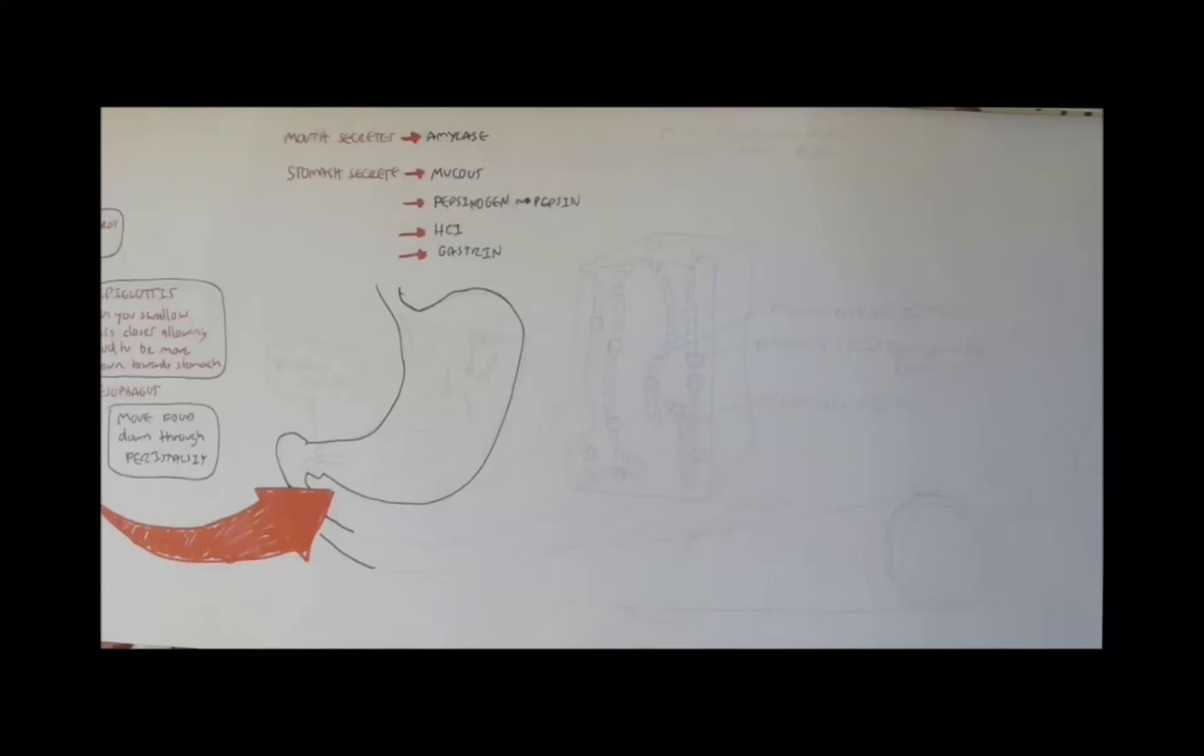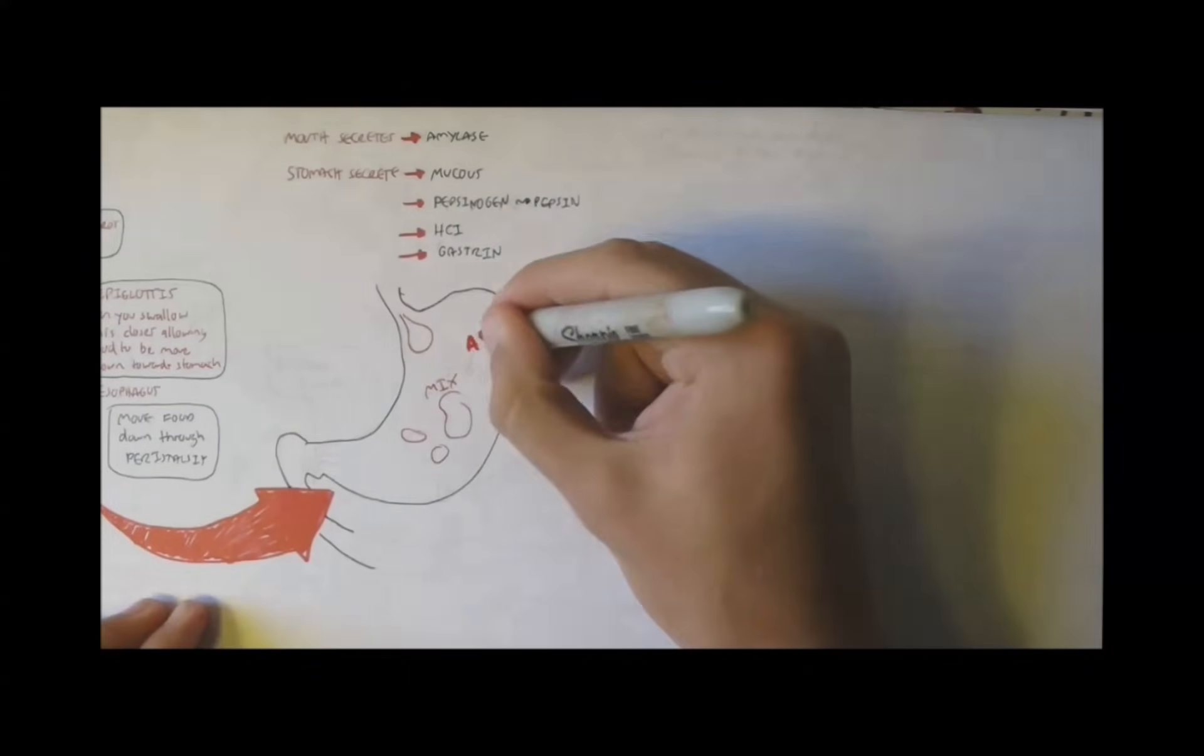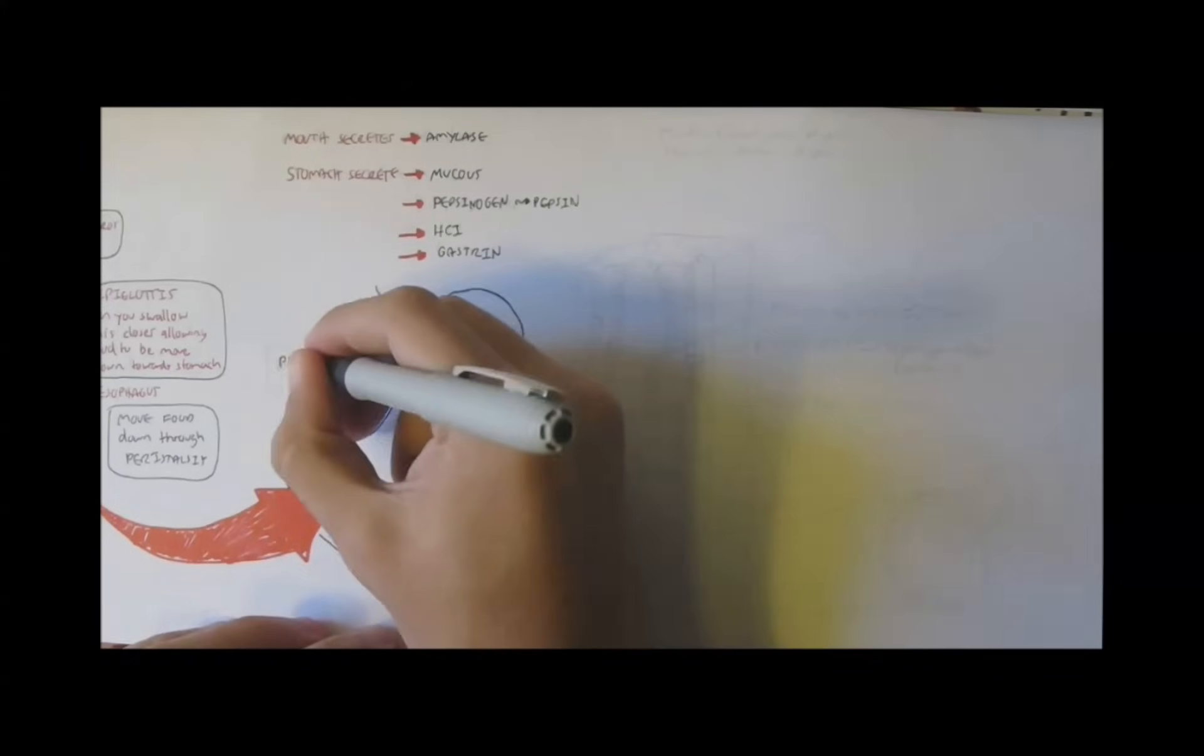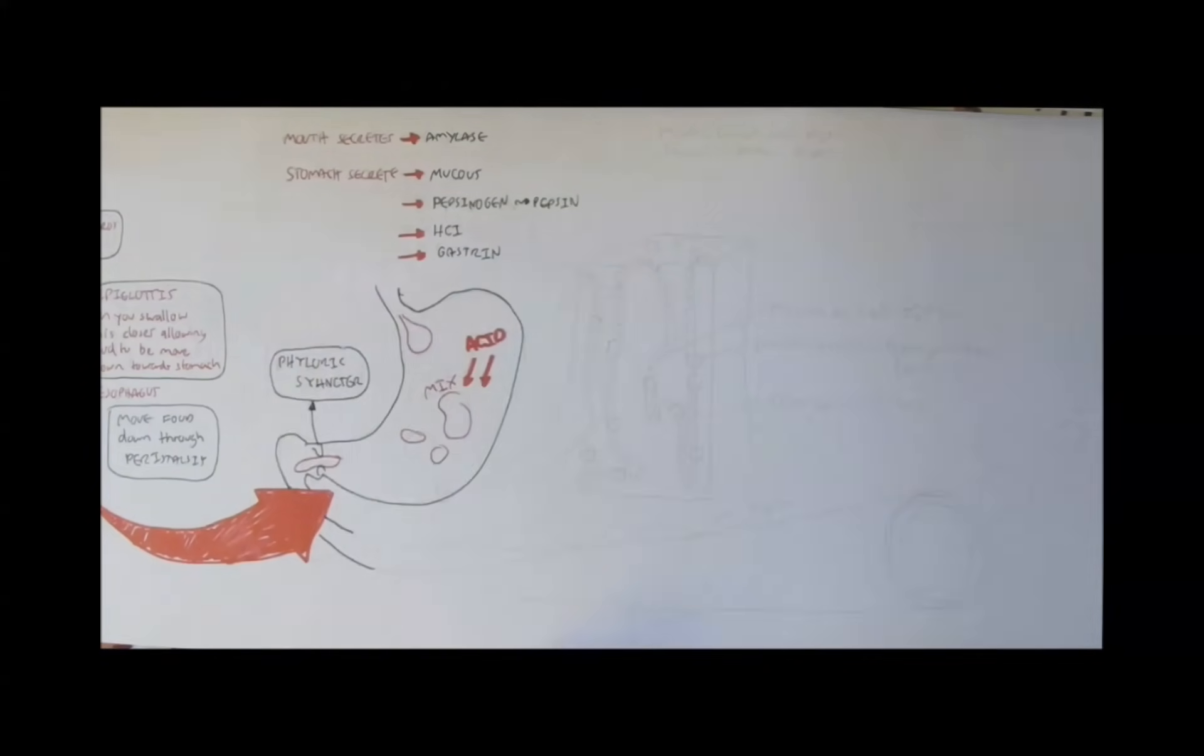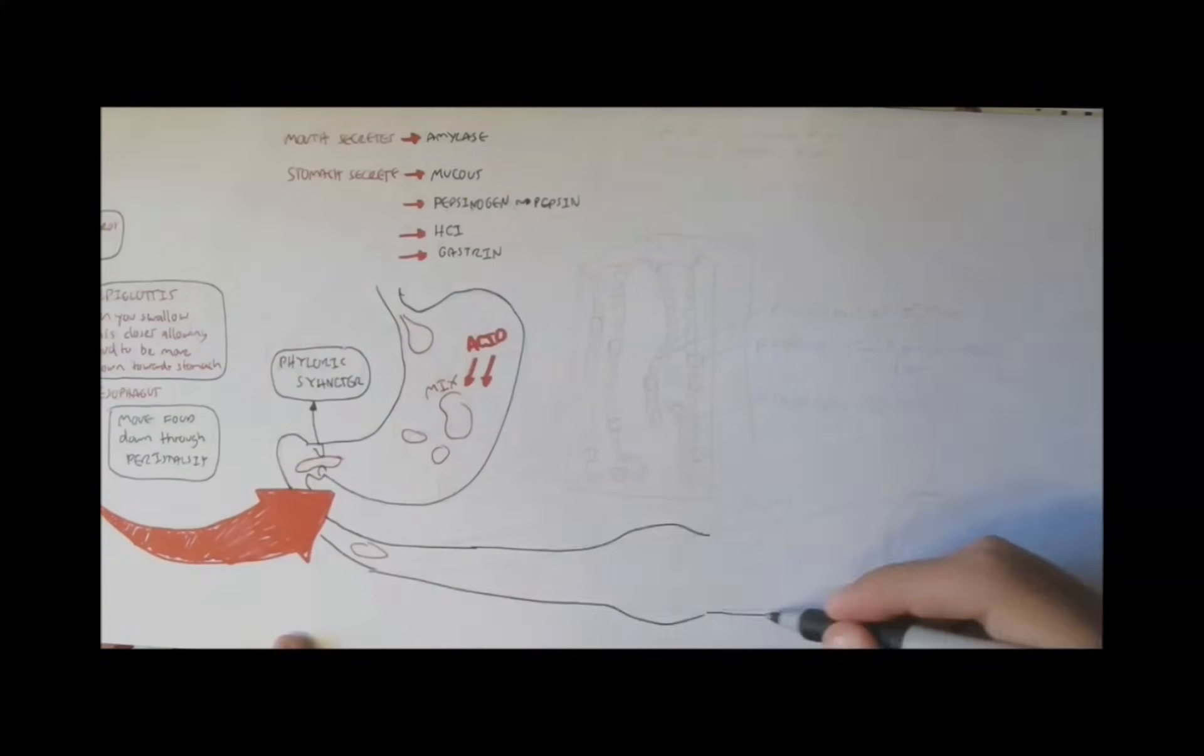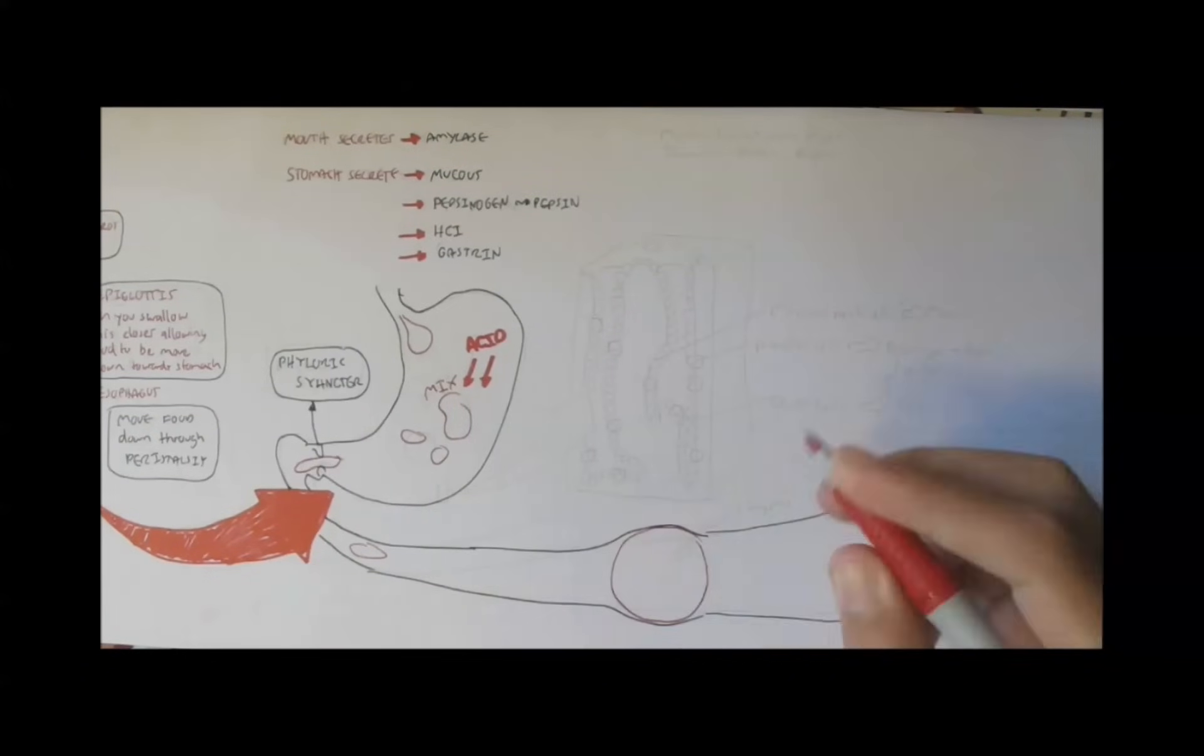But the stomach essentially mixes the bolus, the food, and secretes acid to help in the breakdown. And once the food has been partially digested by the stomach, by the acid, it will move through the pylorus sphincter.